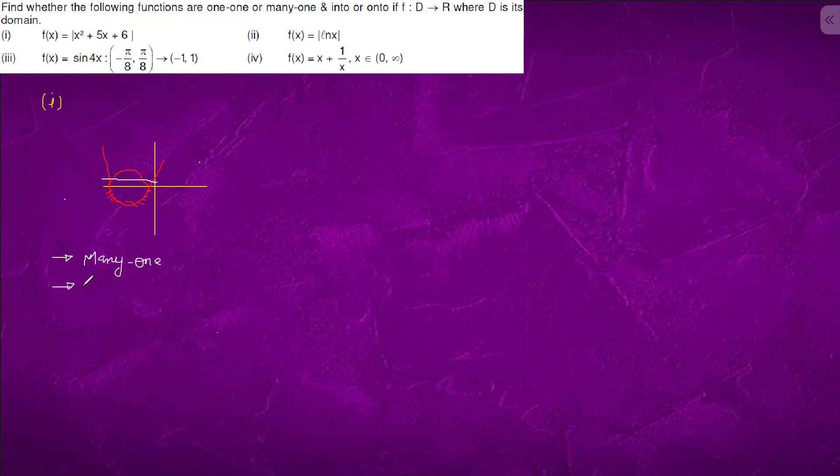And second, our range is R. But we have only intersection from zero to infinity. That means this part will be left. So it is into.